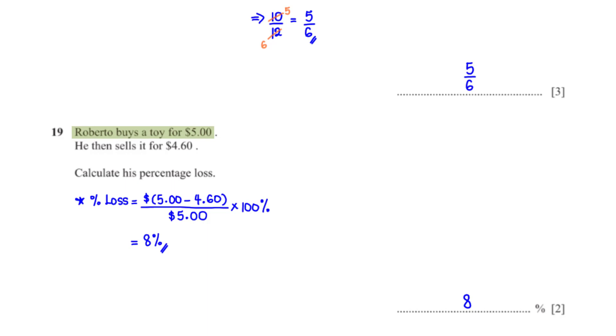Roberto buys a toy for $5. He then sells it for $4.6. Calculate his percentage loss. His percentage loss is equal to his loss, which is 5 minus $4.6, divided by the cost of the toy, which is $5 times 100%. This gives us 8%.